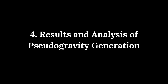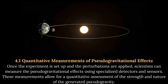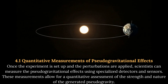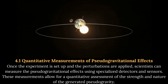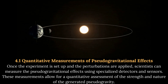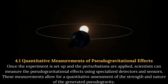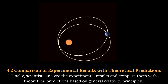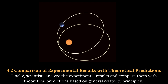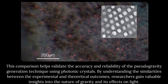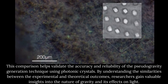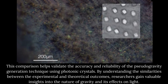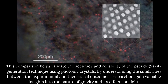Results and analysis of pseudogravity generation. Once the experiment is set up and perturbations are applied, scientists measure the pseudogravitational effects using specialized detectors and sensors. These measurements allow for a quantitative assessment of the strength and nature of the generated pseudogravity. Scientists then analyze the experimental results and compare them with theoretical predictions based on general relativity principles, helping to validate the accuracy and reliability of the pseudogravity generation technique using photonic crystals.